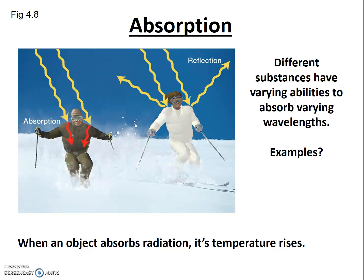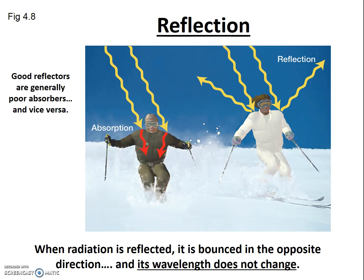If it's sunny and you want to stay cool, do you wear black or white? Which car gets hotter in summer — the black one or the white one? White is generally a poor absorber and a good reflector. We can think of reflection as the opposite of absorption. When radiation is reflected, it is bounced in the opposite direction and its wavelength is not changed. Consider a mirror reflecting light, or visible and ultraviolet light bouncing off snow or water — this is one reason you can get a nasty sunburn while swimming or skiing. Objects that are good reflectors are generally poor absorbers, and vice versa.